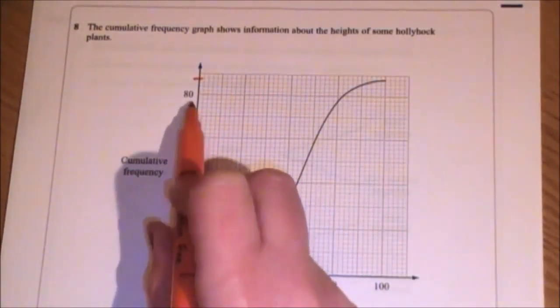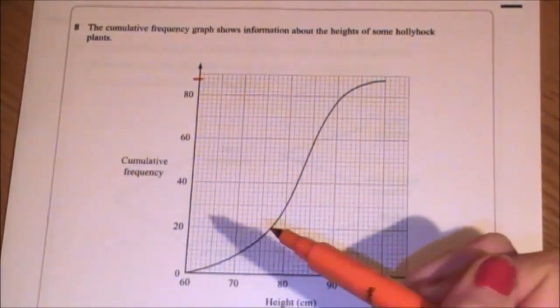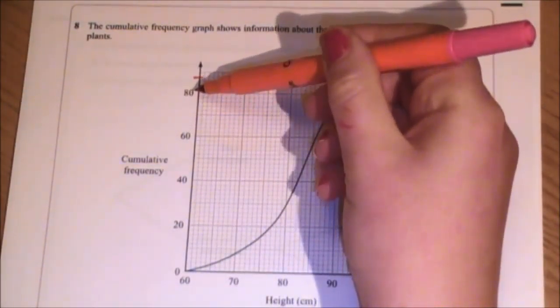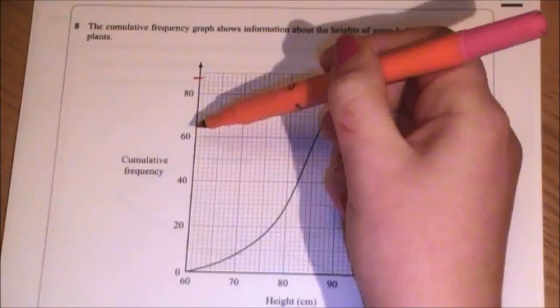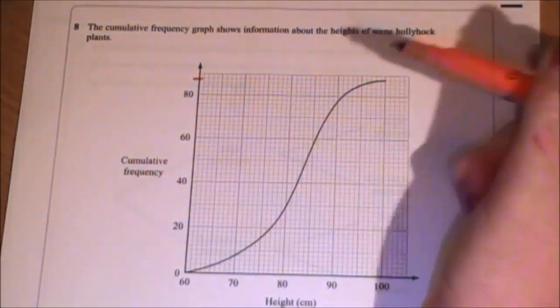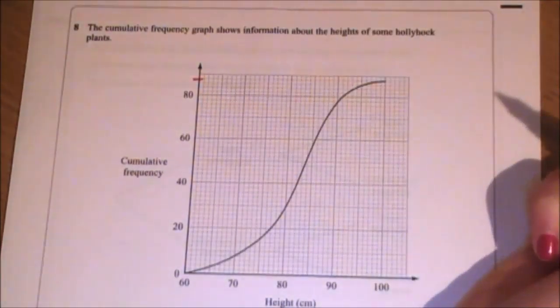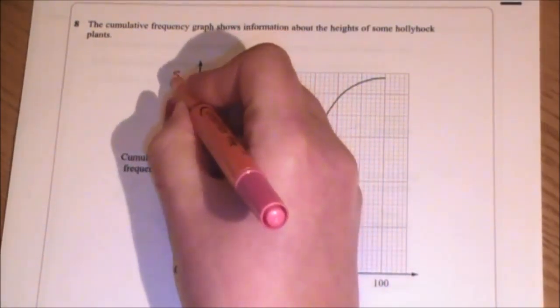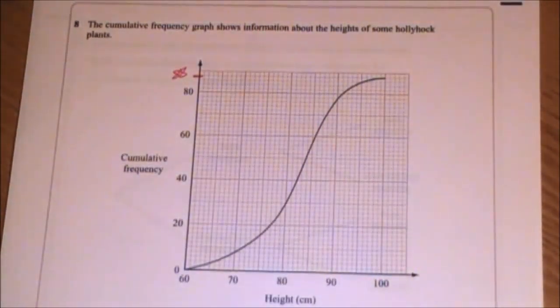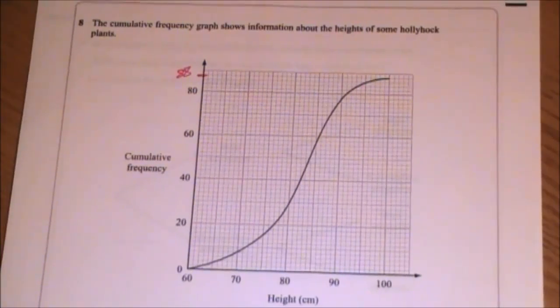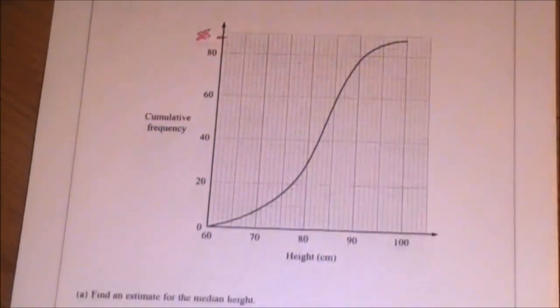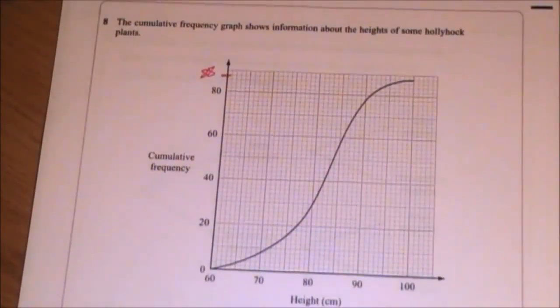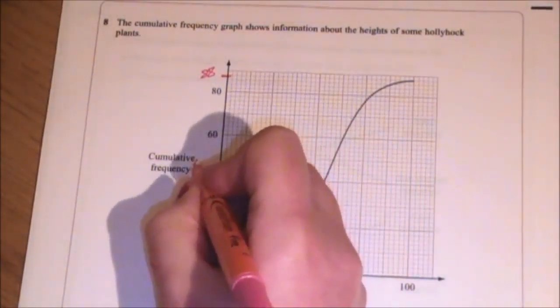Here it goes from 60, and then there's two, sort of, five squares, and then it gets to 80. So it increases by 20 over a 10 increment period. So that means each little line is worth two. So that's 82, 84, 86, 88. So there's 88 people or plants altogether. Now, I want the median, which is halfway. So half of 88 is 44. So I want to first of all look for 44.